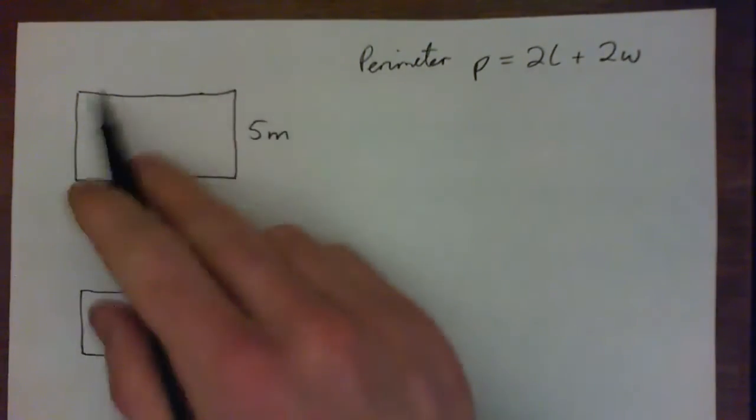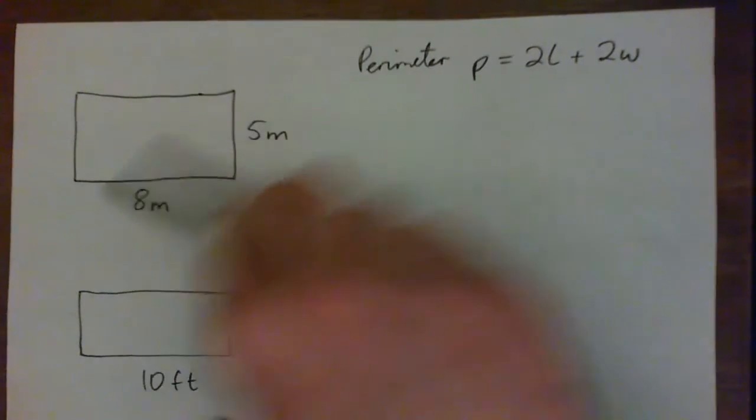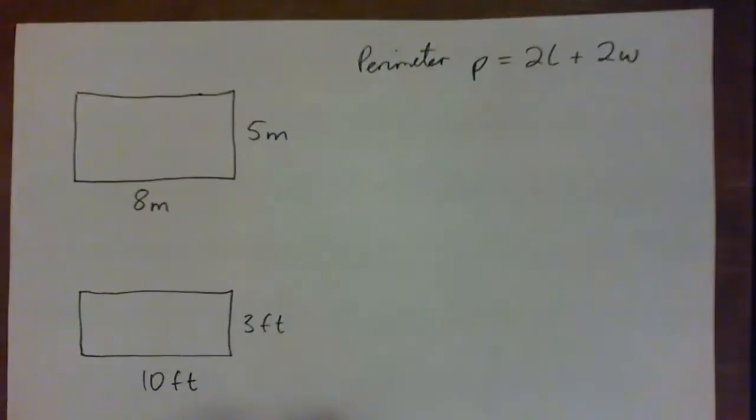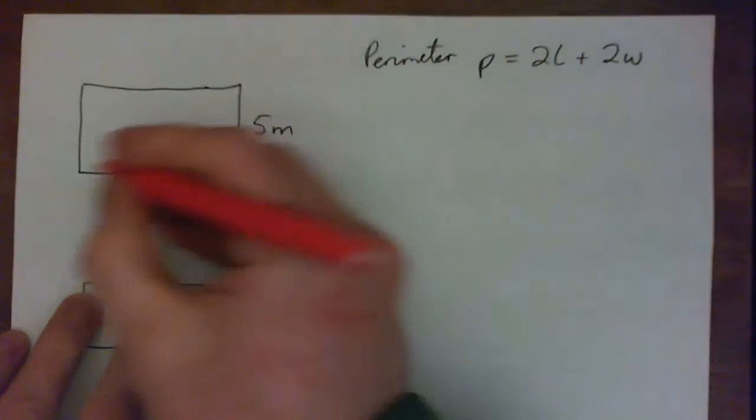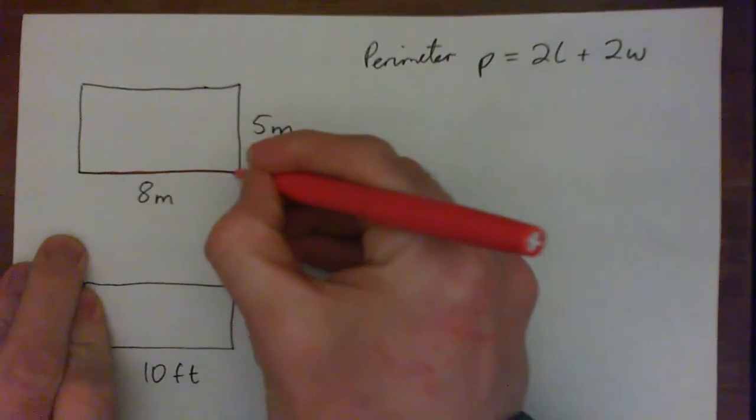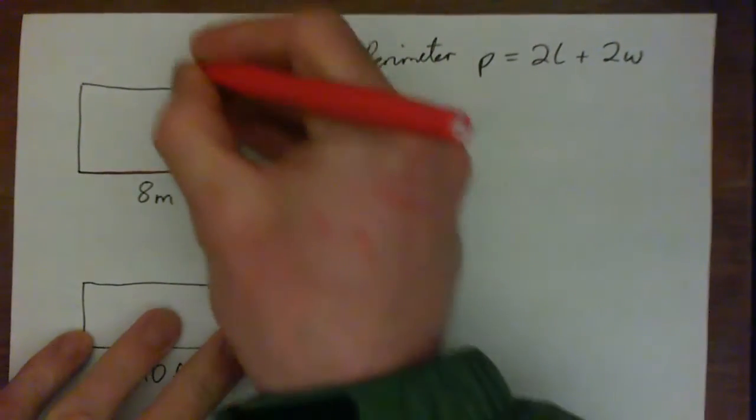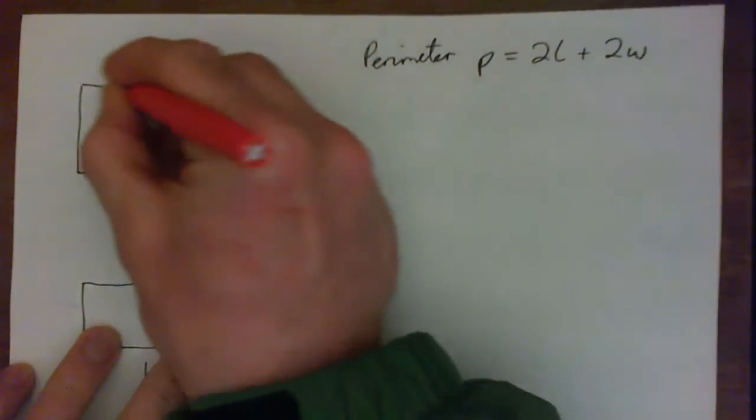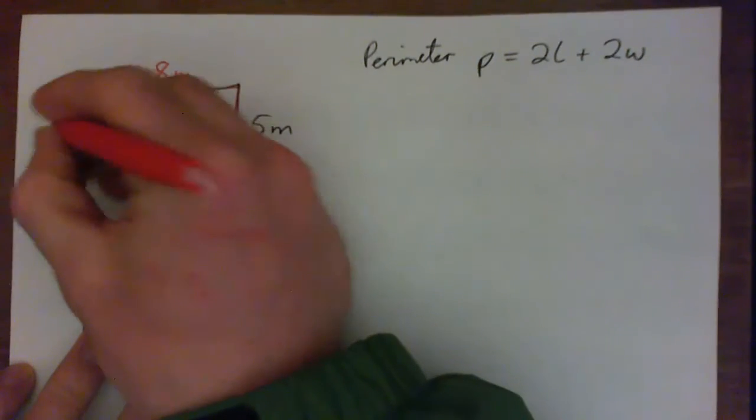The surface area is the area of the surface. Perimeter is area around the outside. So the length around the outside is 8 meters plus 5 meters plus another 8 meters, plus another 5 meters.